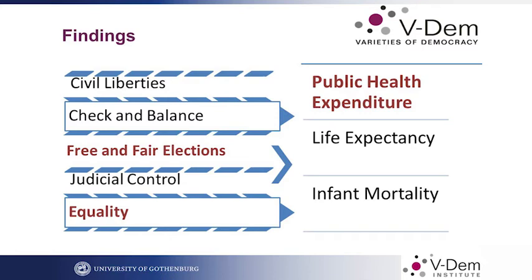Based on these five distinct dimensions, we explored whether they have an impact on indicators of health. We tried to see whether they have an impact on public health expenditure, and we found that the dimension of equality contributes a lot to public health expenditure. We also find that free and fair election — quality of election — has a significant positive effect on that.